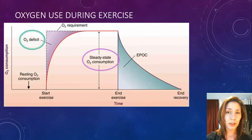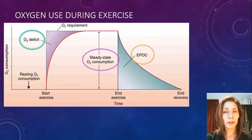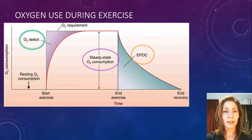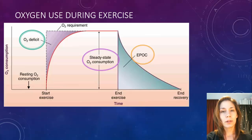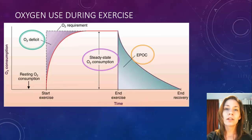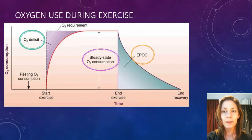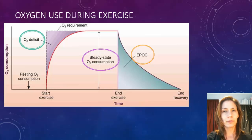Once you finish exercising — represented by the black line — you go into the state of EPOC. Your oxygen consumption for exercise is reduced to zero, but to remove lactate and carbon dioxide and to replenish PC levels, you need a little bit of extra oxygen — that's why you have EPOC. The longer you exercise, the longer that EPOC recovery time will be.